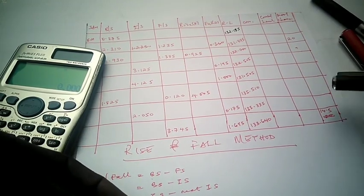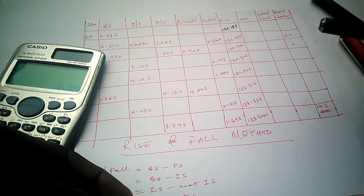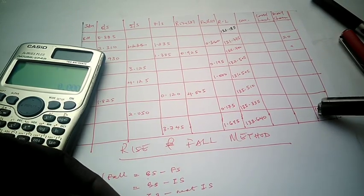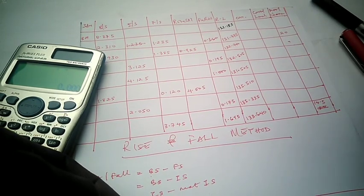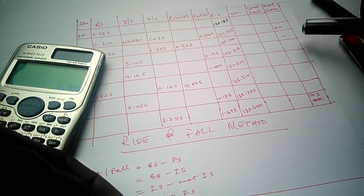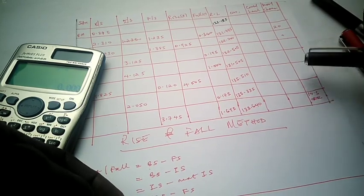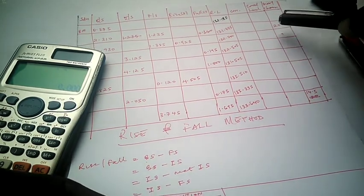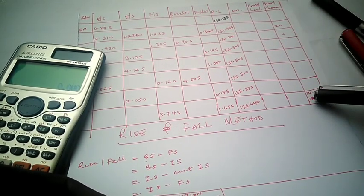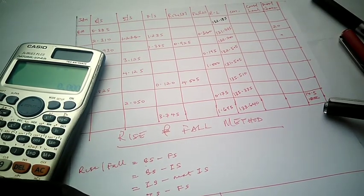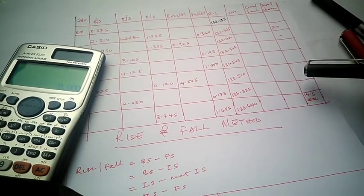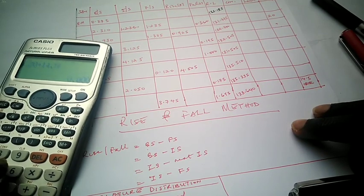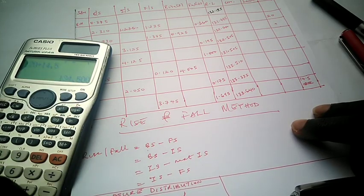We are assuming the last point is also a benchmark because that's where the leveling closes. Getting to that last point was not a full 20 meters — it was 14.5 meters, because that is where the level closed. So to calculate the total distance, we add everything up: 20 + 40 + 60 + 80 + 100 + 120, giving us 120 meters, plus 14.5 meters, which equals 134.5 meters total distance covered.